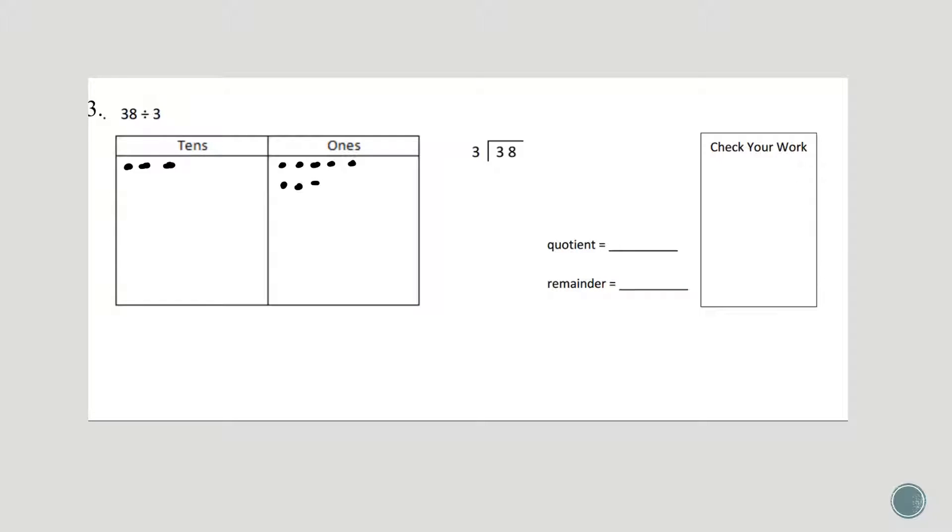I'm dividing by 3, so I want to make 3 groups. And now I'm going to divide by 3. So I'll start with my tens and break these number disks up into my three groups. So here's 1, 2, 3. Well, that worked out perfectly. No extras.